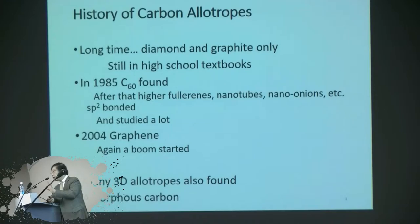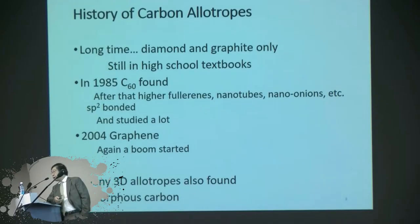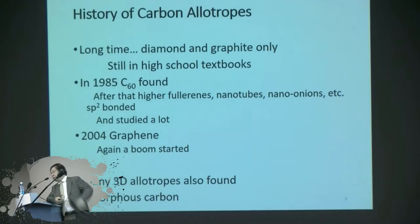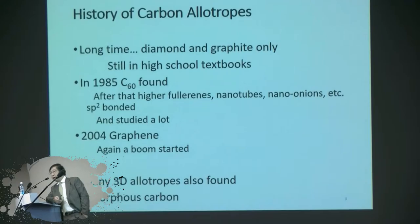SP2-bonded graphene and SP3-bonded diamond are not counterparts with each other. They are different, and you should understand what they are. So in 1985, C60 was found, and after that many people studied it, but still not so easy. And in 2004, a Russian young guy found a new type of carbon 2D structure called graphene — peeled from graphite layer by layer. So 2D nanostructures. And people rushed, and are now rushing to study it.